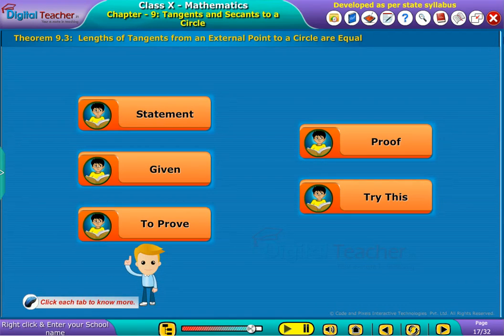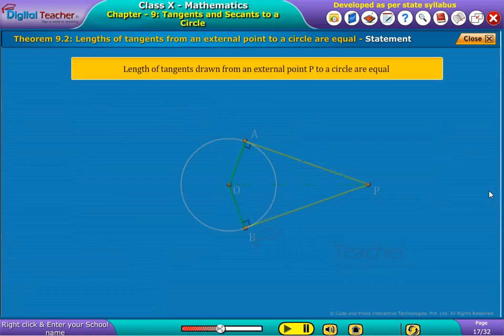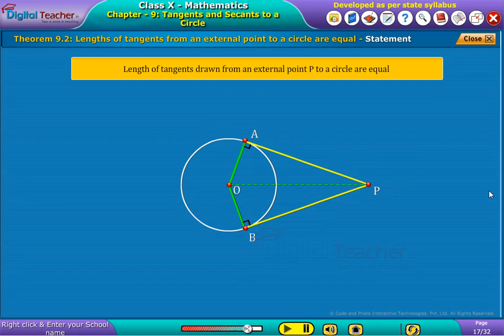Click each tab to know more. Theorem states that lengths of tangents from an external point to a circle are equal.